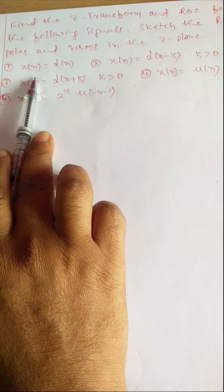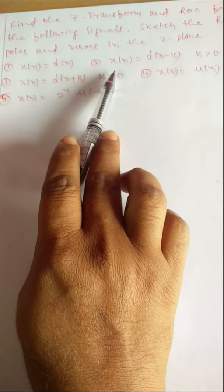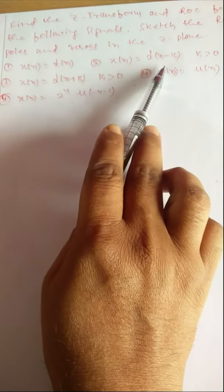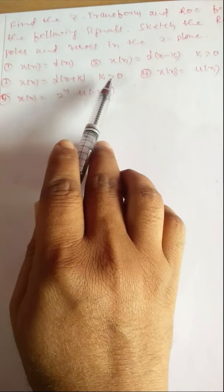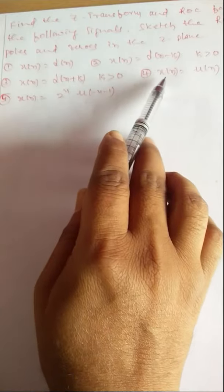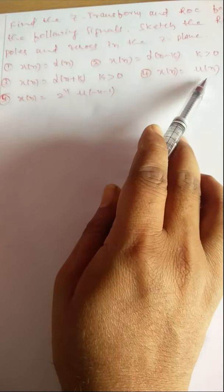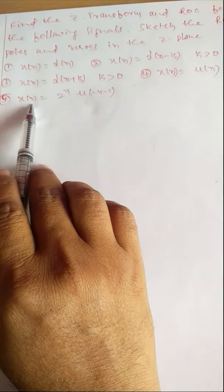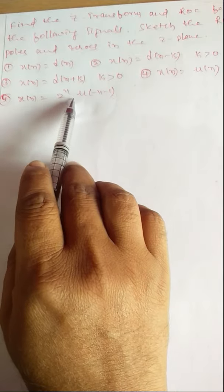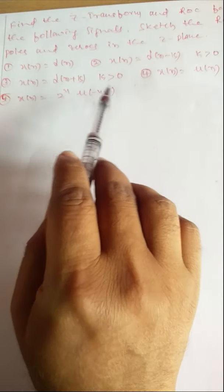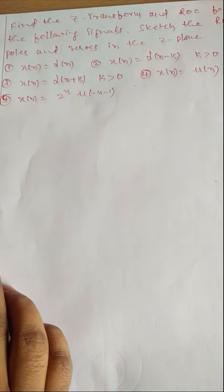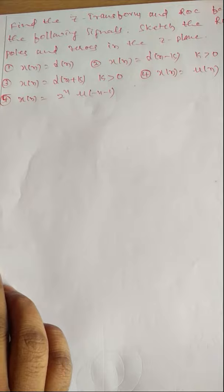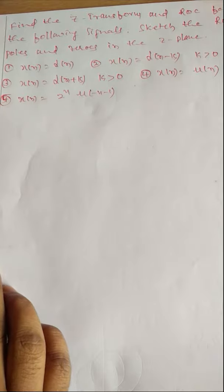The first problem is X(n) = δ(n). The second problem is X(n) = δ(n-k) where k > 0. The third problem is X(n) = δ(n+k) where k > 0. The fourth problem is X(n) = u(n). The fifth problem is X(n) = 2^n · u(-n-1). These are the basic signals. Let us find the Z-transform of these basic signals and plot their ROC, poles and zeros in the Z-plane.